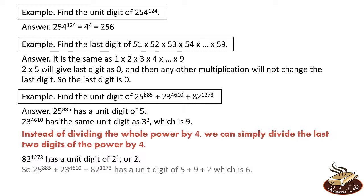So the unit digit of 25^885 + 23^4610 + 82^1273 is the unit digit of 5 + 9 + 2 = 16, which gives a unit digit of 6.